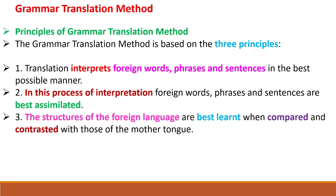The principles of the Grammar Translation Method are: first, translation interprets foreign words, phrases, and sentences in the best possible manner. Second, in this process of interpretation, foreign words, phrases, and sentences are best assimilated. Third, the structures of the foreign language are best learned when compared and contrasted with those of the mother tongue.